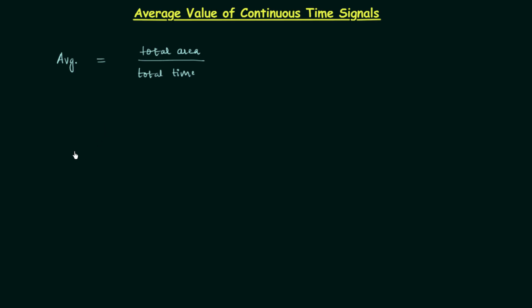I will simplify this formula. For periodic signals the formula will be different, and for non-periodic signals the formula will be different. First I will explain how to obtain the formula for periodic signals, and then we will see the formula for non-periodic signals. The average is equal to total area over the total time, and we can obtain the area by integrating the signal.